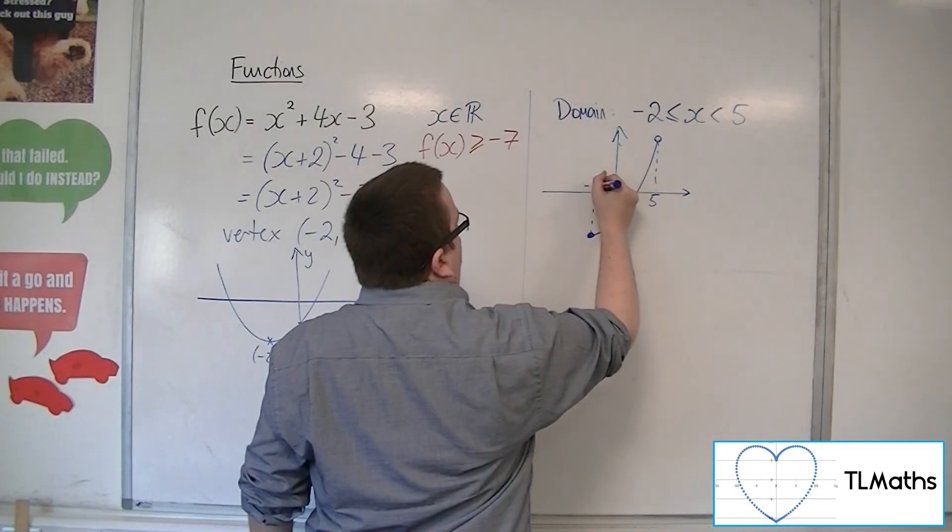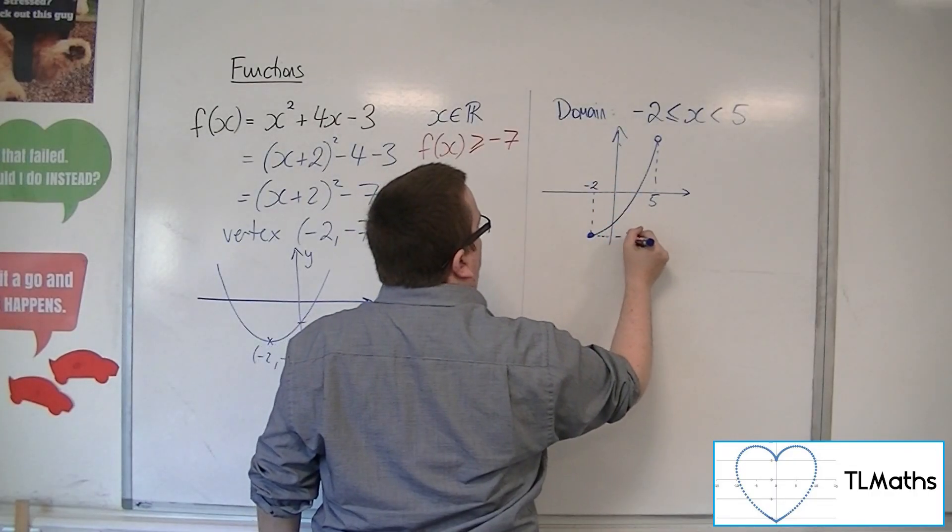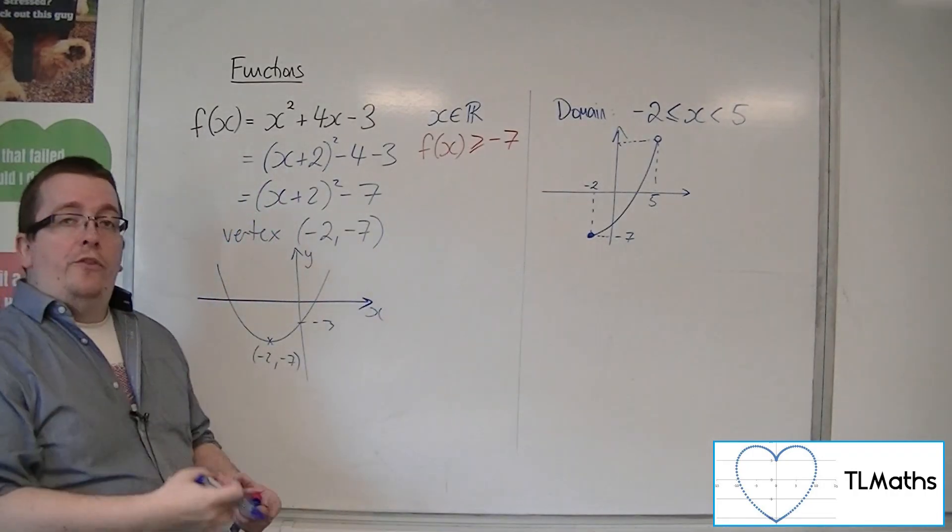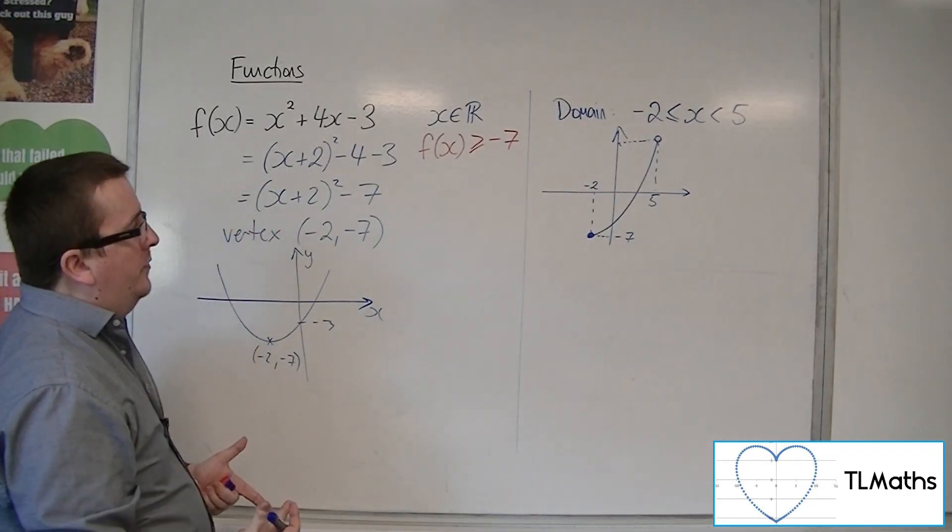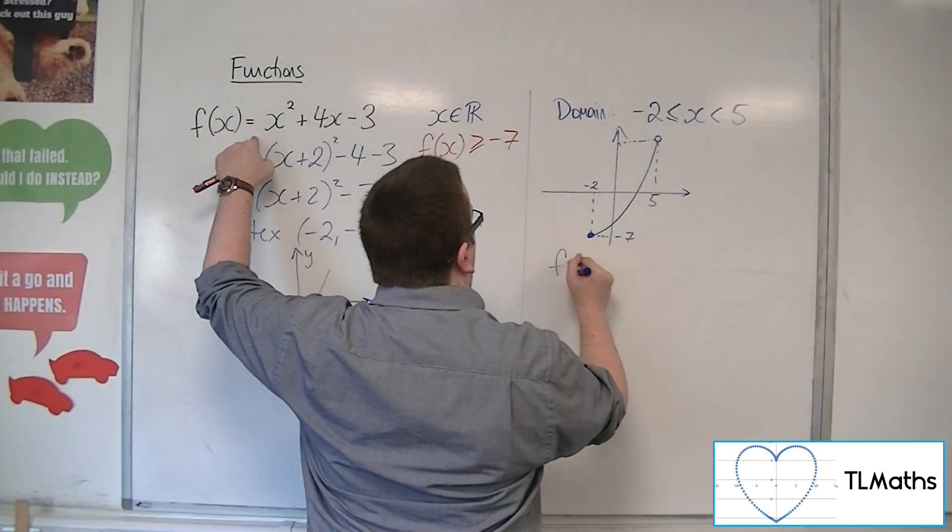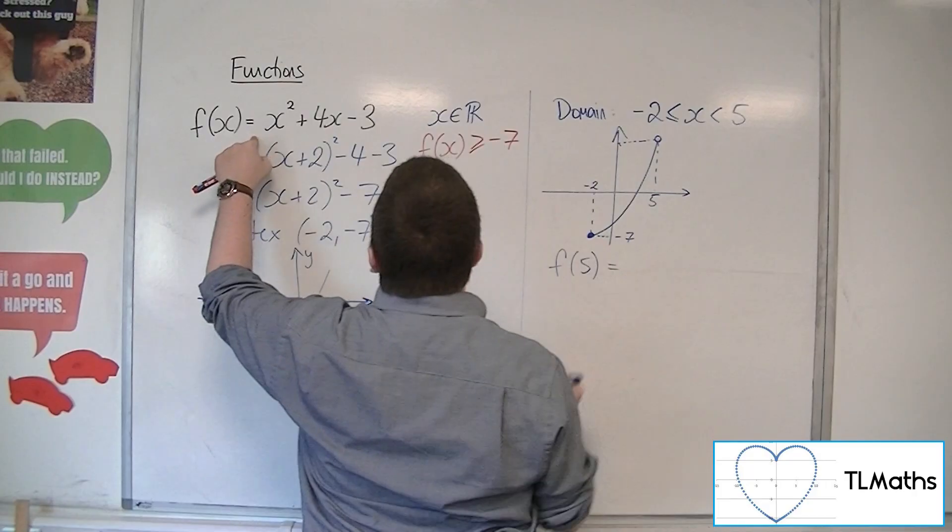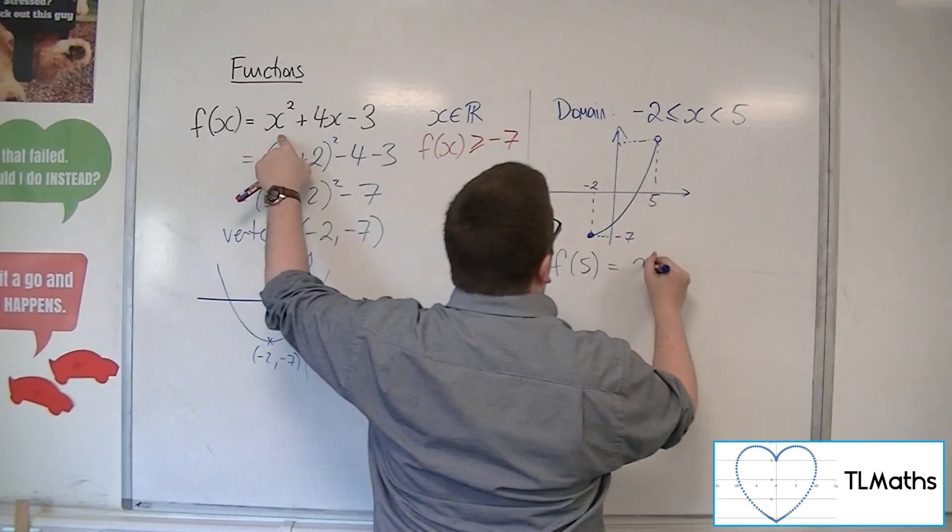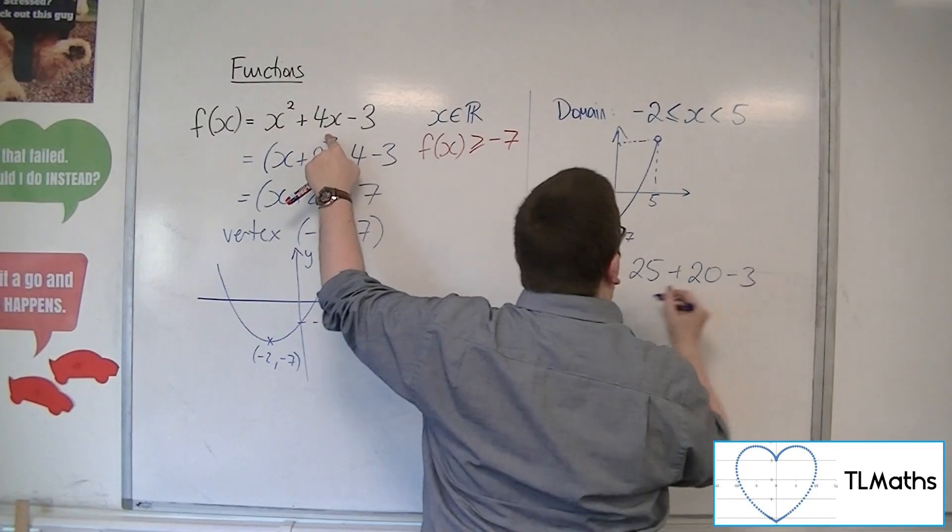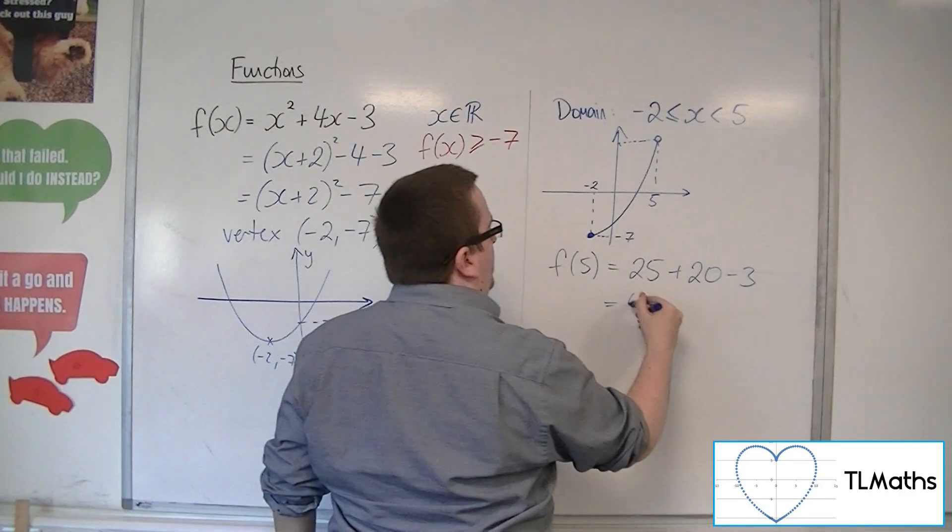So that would be at -2, so that's down at -7. So I need to find the y-coordinate that goes with 5. I would need to substitute 5 into this. So f(5) is 25 + 20 - 3, so 42.